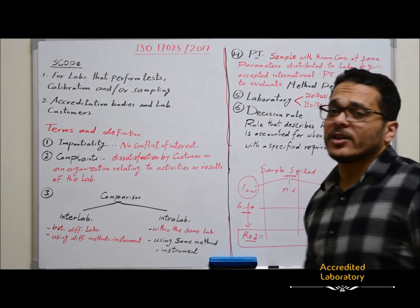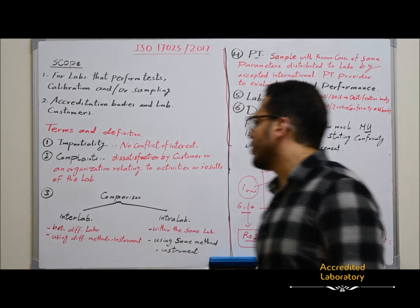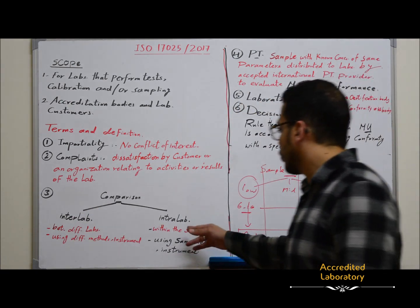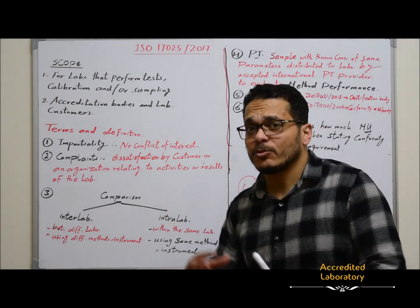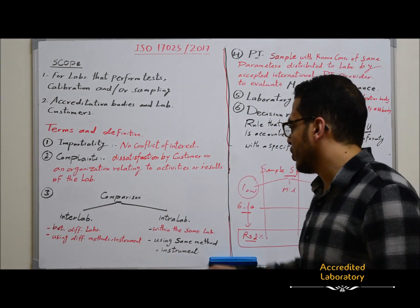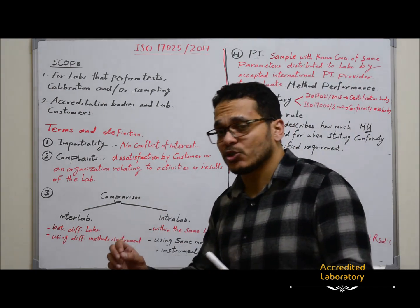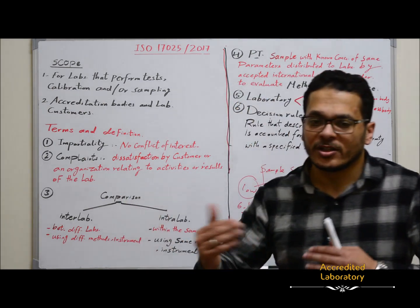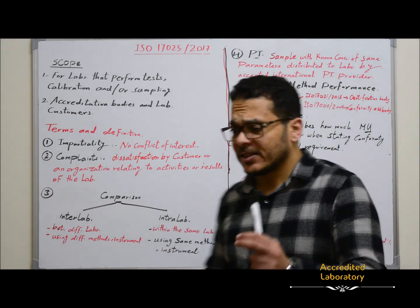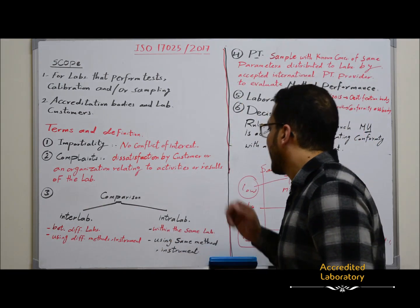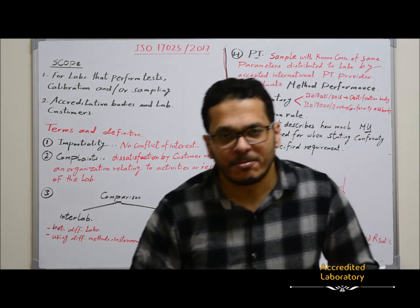To summarize the difference: inter-lab comparison is between different laboratories, evaluating method performance using different methods and different instruments since every lab uses different instruments and methods, but all analyze the same parameters. Intra-lab comparison is within the same laboratory using the same method and same instrument.